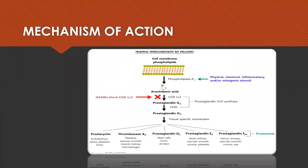The mechanism of action of NSAIDs: physiologically, phospholipids get converted to arachidonic acid by the action of phospholipase A2, and arachidonic acid is further converted to prostaglandins and its isomeric forms by the cyclooxygenase enzyme. Prostaglandins — specifically prostaglandin I2 and prostaglandin E2 — are pain mediators. Thus, NSAIDs inhibit cyclooxygenase either selectively or non-selectively to bring about their effect.